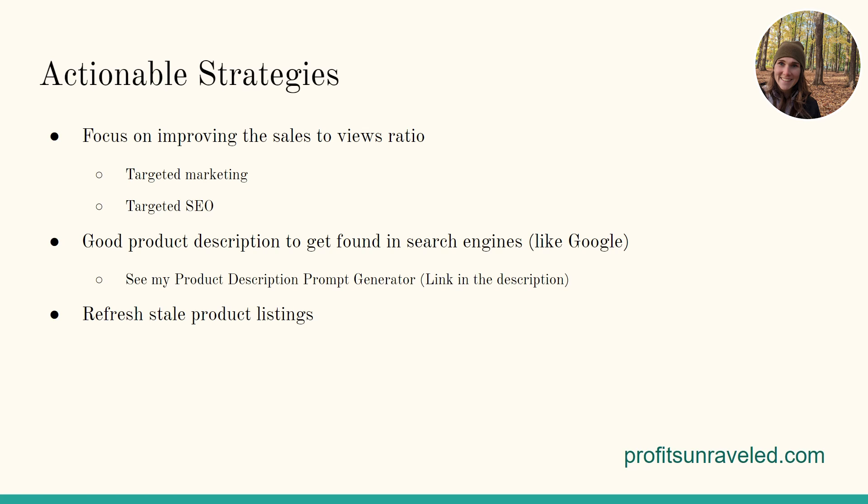Actionable strategies: focus on improving the sales-to-views ratio through targeted marketing and targeted SEO. I have a couple of videos linked in the description below. Another piece of SEO is product descriptions — they're the main way your products get found in search engines like Google, DuckDuckGo, or Bing. The great thing about product descriptions on Zazzle is we're not very limited by character use, so we can add lots of keywords. Optimize your products for search engines because that's where all the traffic is — Google has way more discoverability than Zazzle itself. I have a tool for you: a product description prompt generator that uses AI like ChatGPT or Bard to create product descriptions for you. The link is in the description.